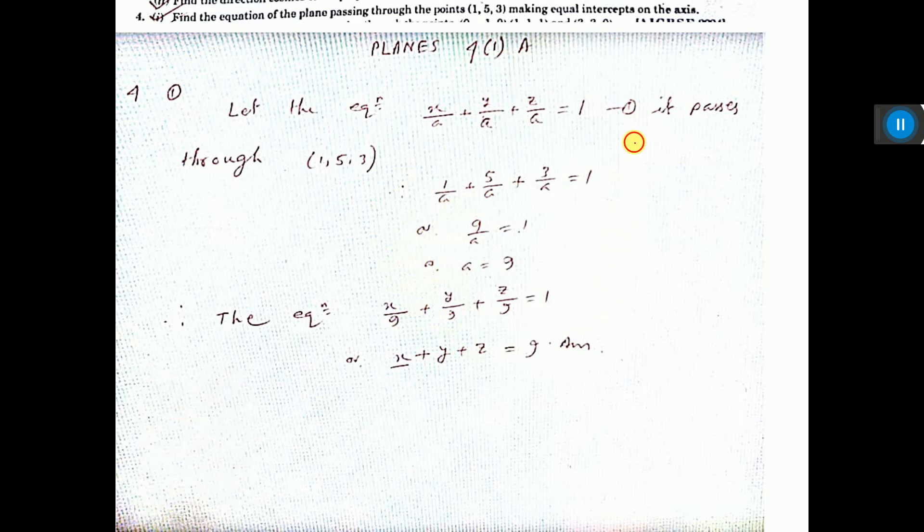The answer is that if you draw the axes - x axis, y axis, and z axis - the plane is going in this way. And all these intercepts are a, this is also a, this is also a. So x/a + y/a + z/a = 1, because a, b, c - all three are equal. So I consider all as a.